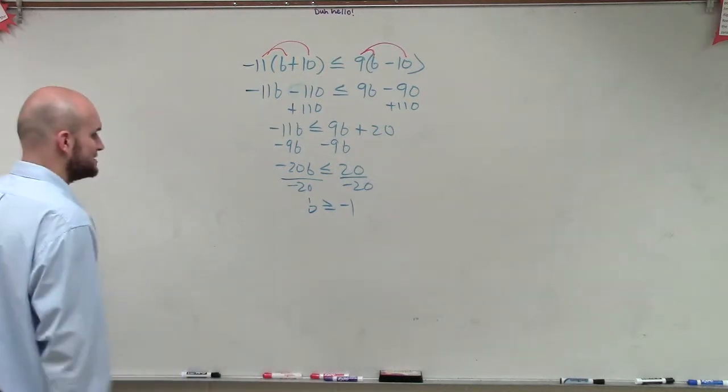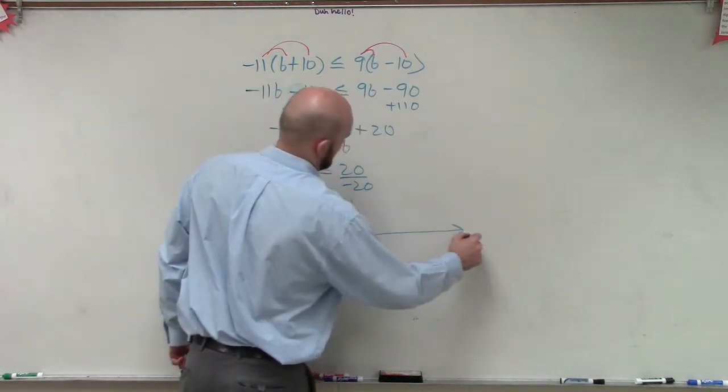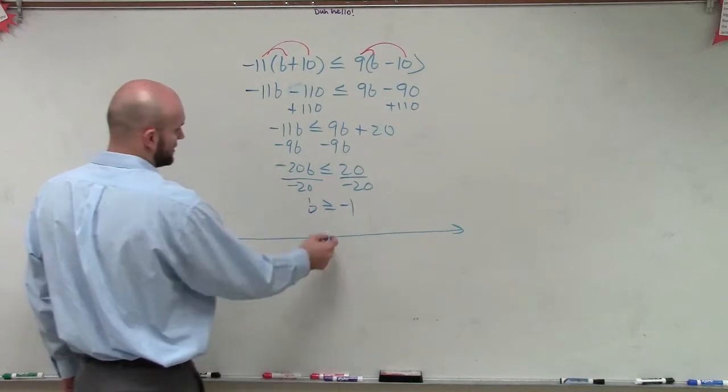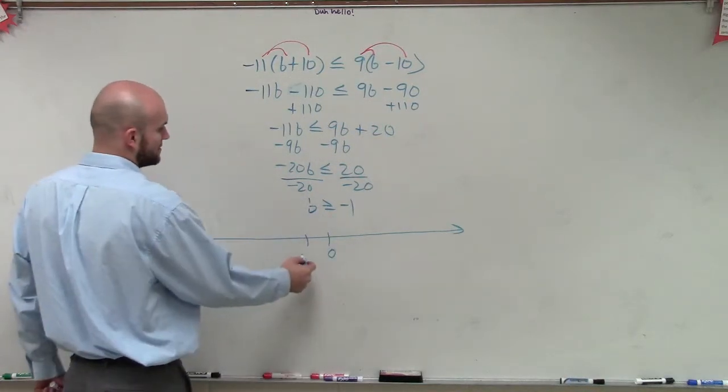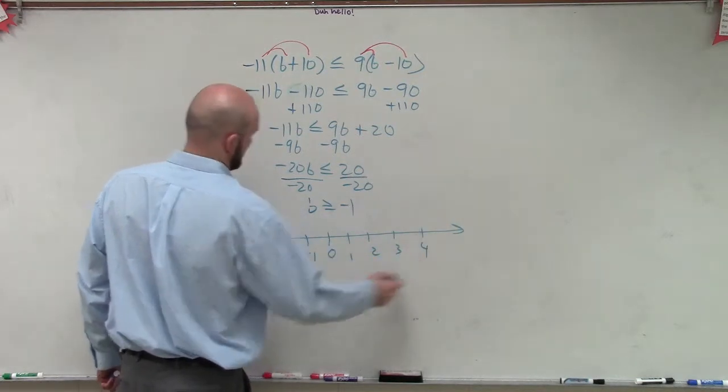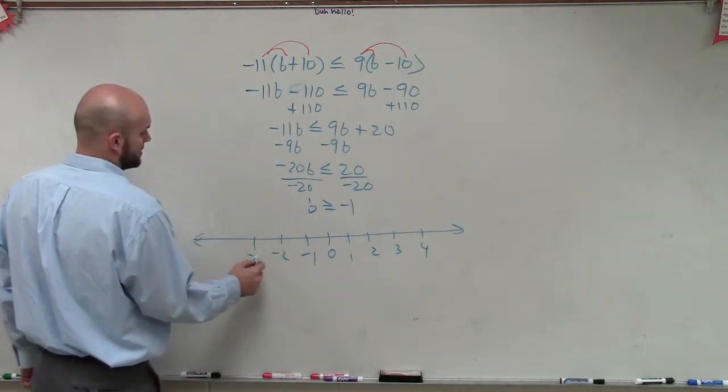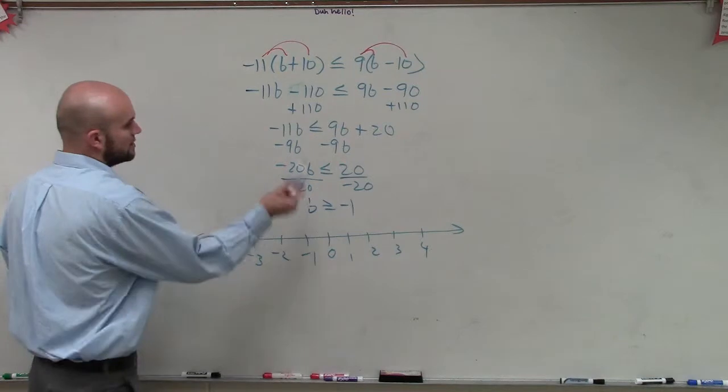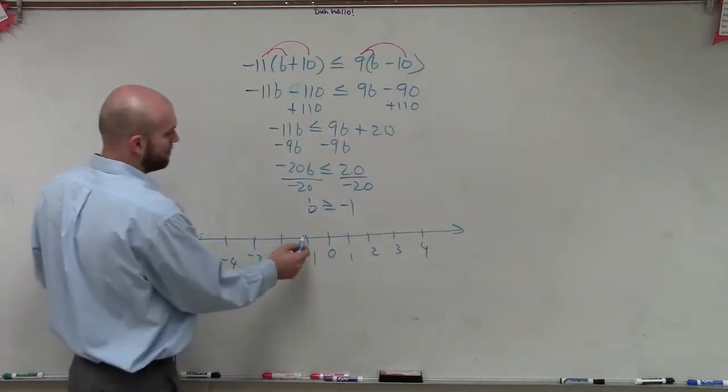So now what I need to do is graph this. So what I'm going to do is I'm going to go over to negative 1. So if I say here's 0, here's negative 1. This is negative 2, negative 3, negative 4. So therefore, I go to negative 1. I'm going to make a point.